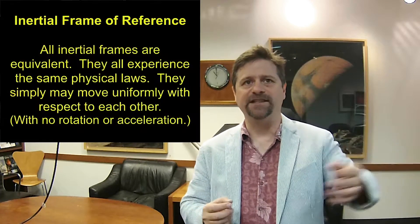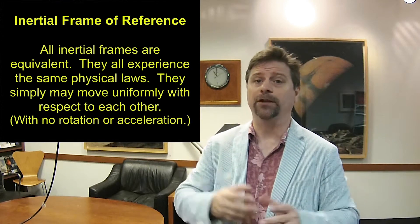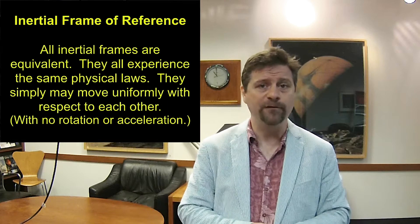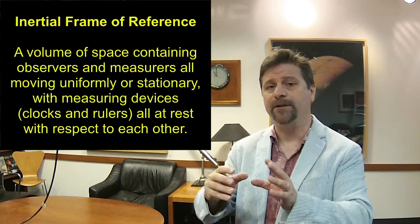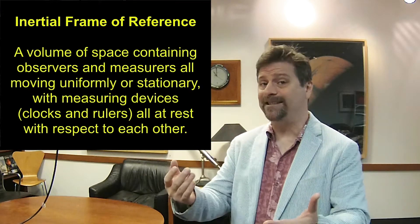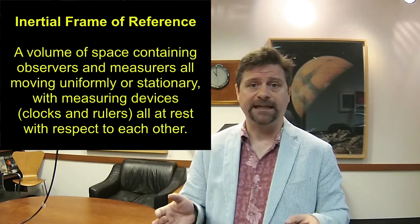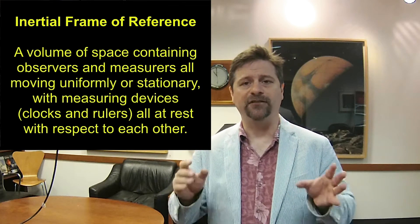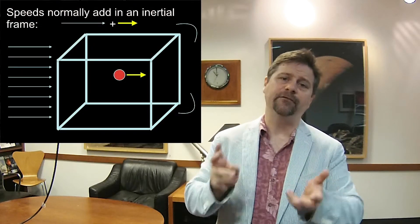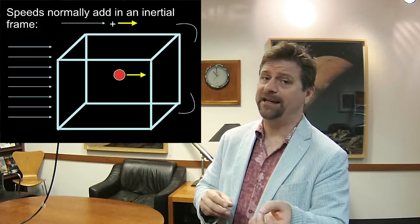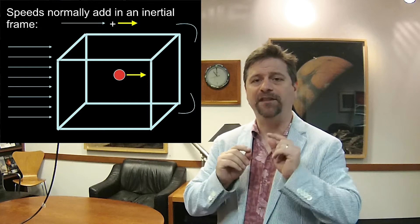So Galilean relativity, once again, says that all inertial frames are equal, meaning you don't know whether or not you're moving inside of an inertial frame. You feel like you're at rest inside of an inertial frame. An inertial frame is something that's not accelerating or rotating. It's one that's either at rest or moving at a uniform velocity. Galilean relativity implied the addition of speeds, meaning one thing moving in one direction, the speed is added from one thing on top of another.